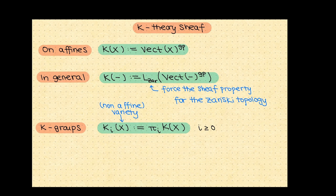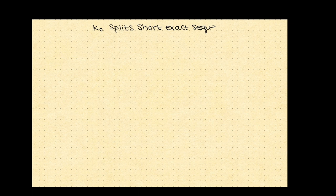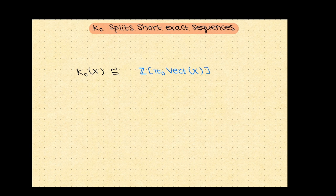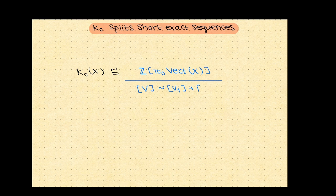One of the important features of this abstract definition of K-theory is that K0 is still computable. In a certain sense, K0 is the universal gadget that splits short exact sequences. More precisely, we can describe K0 of X as follows: we start by taking the free abelian group on the set of isomorphism classes of vector bundles on X, then we quotient by the relation that the class of a vector bundle V is the same as the class of V1 plus the class of V2 for every short exact sequence starting with V1 including into V with quotient V2. The K-theory space is defined as a sheaf whose values we already knew locally, and the K-theory groups are its homotopy groups.